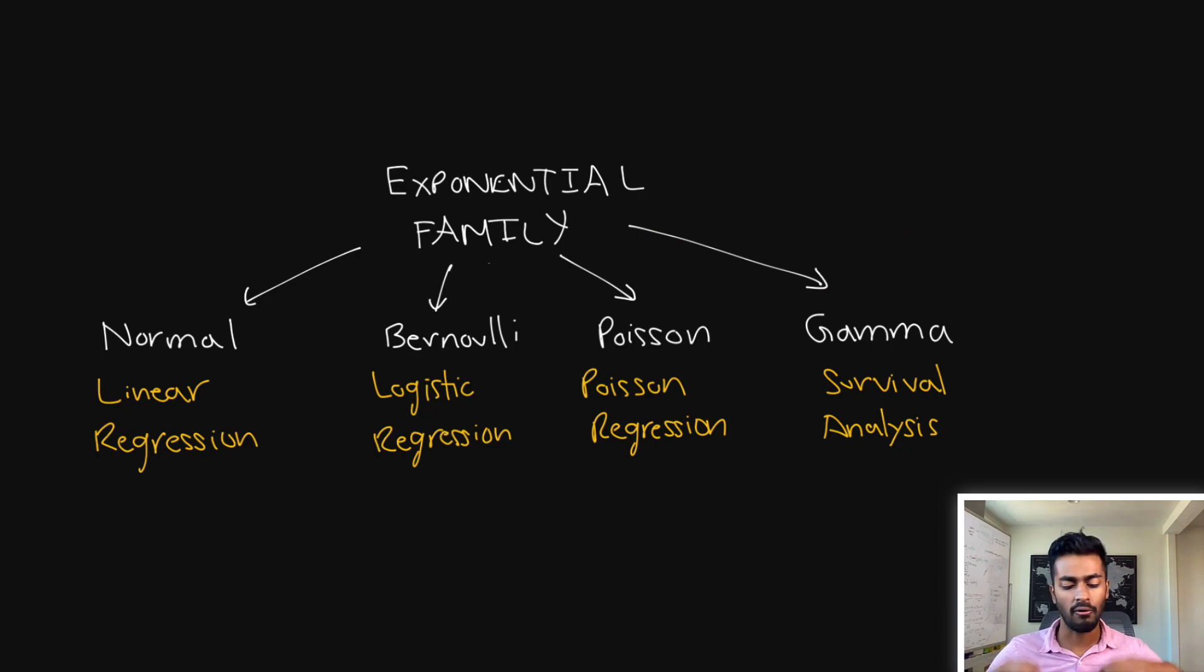Now we can further see how all of these linear models are kind of more related to each other. So first of all, we have the distribution of the response variable can take multiple forms. So for example, if the distribution is a normal distribution, then we can perform a linear regression on it. If the distribution is Bernoulli, we can perform logistic regression, and so on. Now, the normal distribution, Bernoulli, Poisson, and gamma, all of them fall under the same category of the exponential family of distributions. And all of these models over here that we could come up with, all of them fall under the category of generalized linear models.